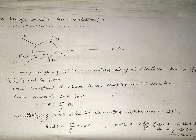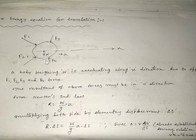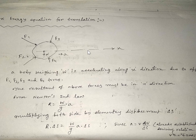Now we derive the work-energy equation for translation. Consider a body of arbitrary shape with several forces acting on it, resulting in acceleration along the x-direction. This means the resultant of all forces acts along x. Let the resultant be R. From Newton's second law, the summation of all forces equals mass times acceleration: R = (W/g)·a.